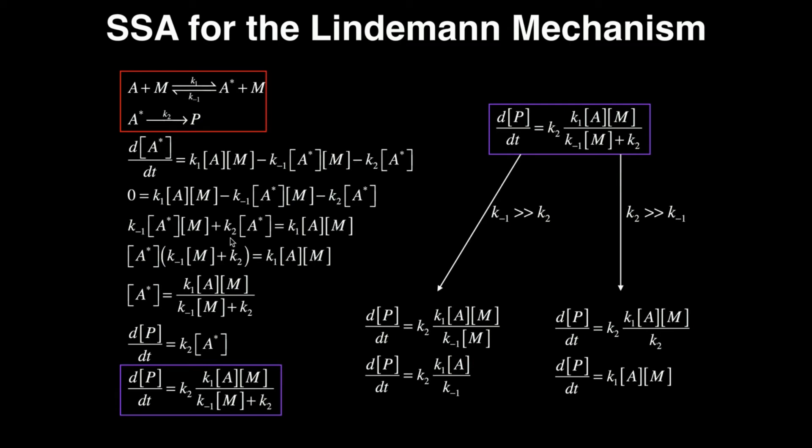Now I have all the A stars on the left side so I can factor out the A star. I factor that out and I get K-1[M] and then plus K2. And all that's equal to K1[A][M]. Now I can divide through both sides by this term in parentheses. And when I do that, I get [A*] is equal to K1[A][M] and then divided by this whole thing in parentheses,